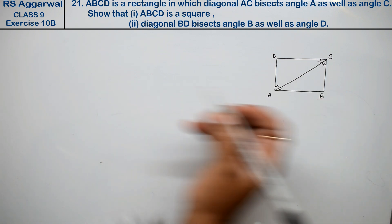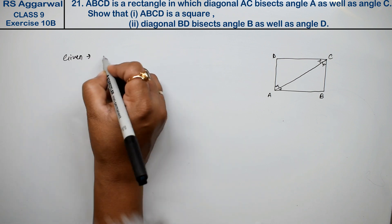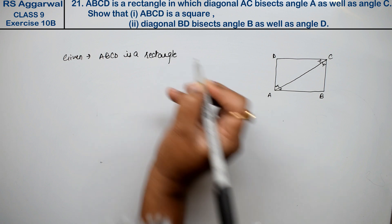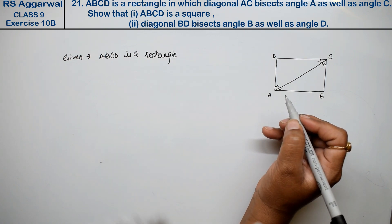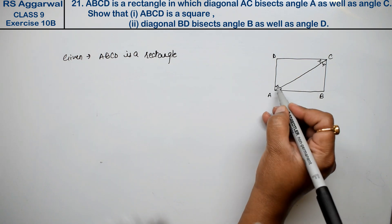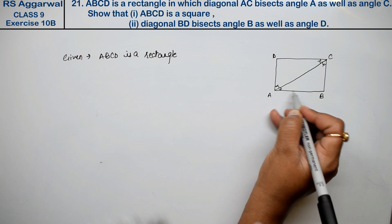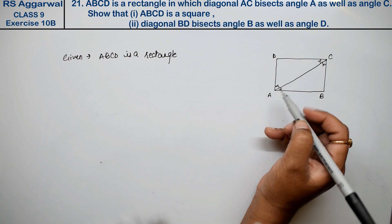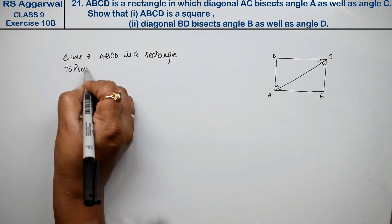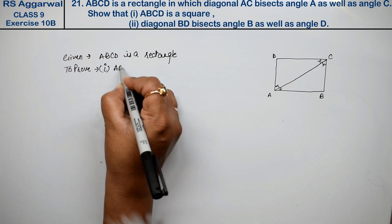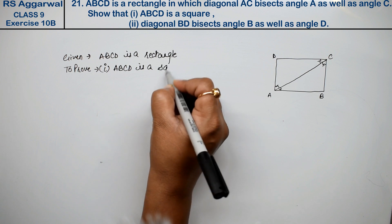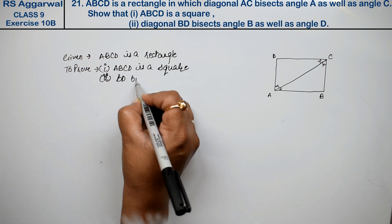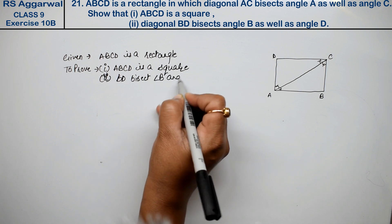कैसे करेंगे? देखिए, अब हमें क्या given है? Given है हमें that ABCD is a rectangle. मैंने अपनी introductory video में बताया था, rectangle को square proof करने के लिए सिर्फ एक ही difference है — rectangle में भी 90 degree के angles होते हैं, लेकिन square में चारो sides equal होते हैं. To prove: first part — ABCD is a square, और second part — BD bisects angle B and angle D.